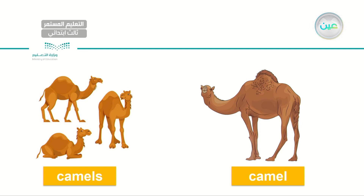Here I have three camels. Camels. Camels. Camels. Very good. So here are different kinds of animals.